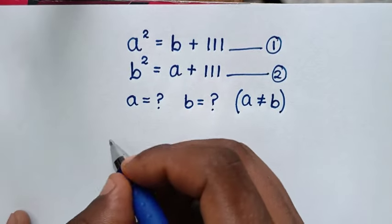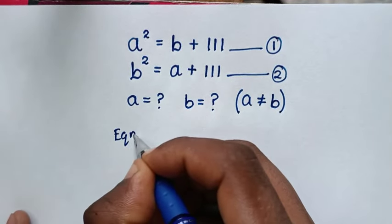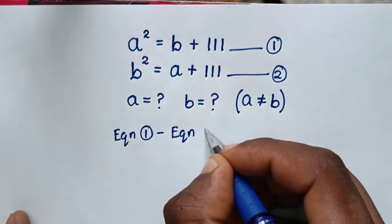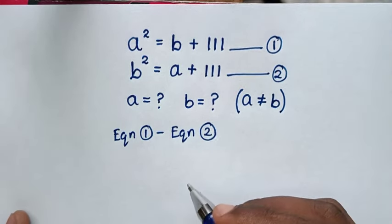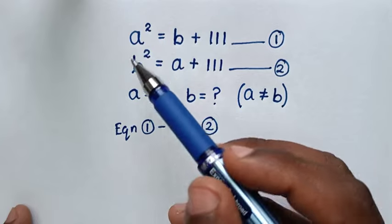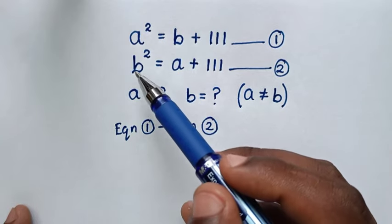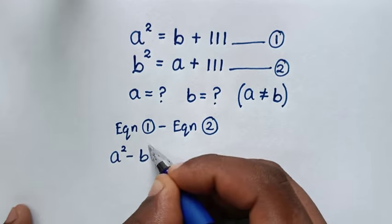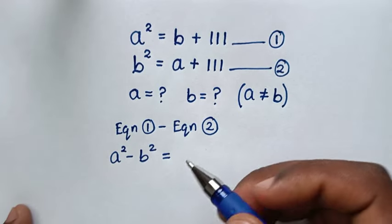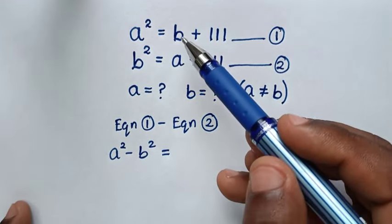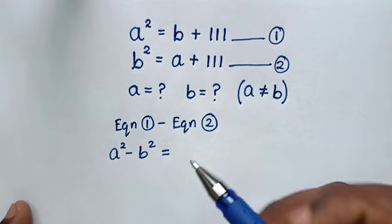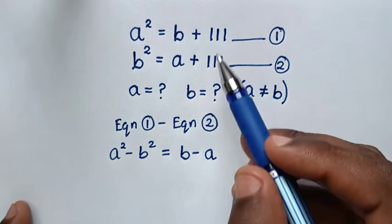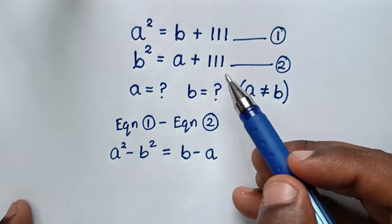Then in the first step, we'll take equation 1 minus equation 2. From equation 1, the left side is a squared; minus equation 2, the left side is b squared. So it will be a squared minus b squared is equal to, on the right side, b minus a. Then 111 minus 111 is 0.